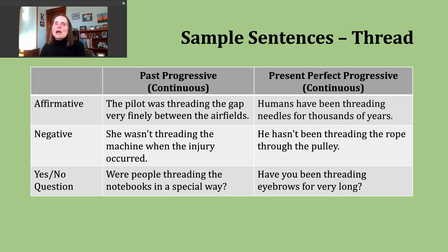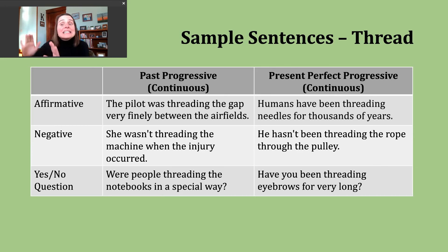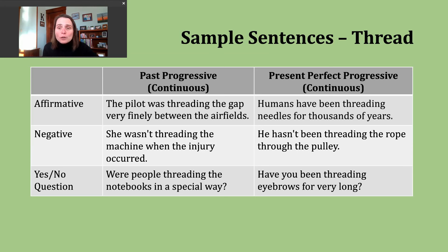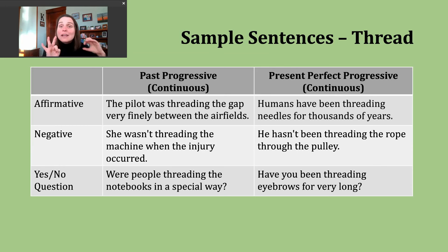Now let's move on and talk about the present perfect progressive — also called the present perfect continuous, which means exactly the same thing. We use this verb tense to talk about actions that started in the past and continue into the present, and may even continue on into the future. The name has three letter P's, which helps you remember you need three parts to make your verb. If the subject is I, you, we, or they, use have, then the participle been (b-e-e-n), then the ing form. If the subject is he, she, or it, use has, been, and the ing form.